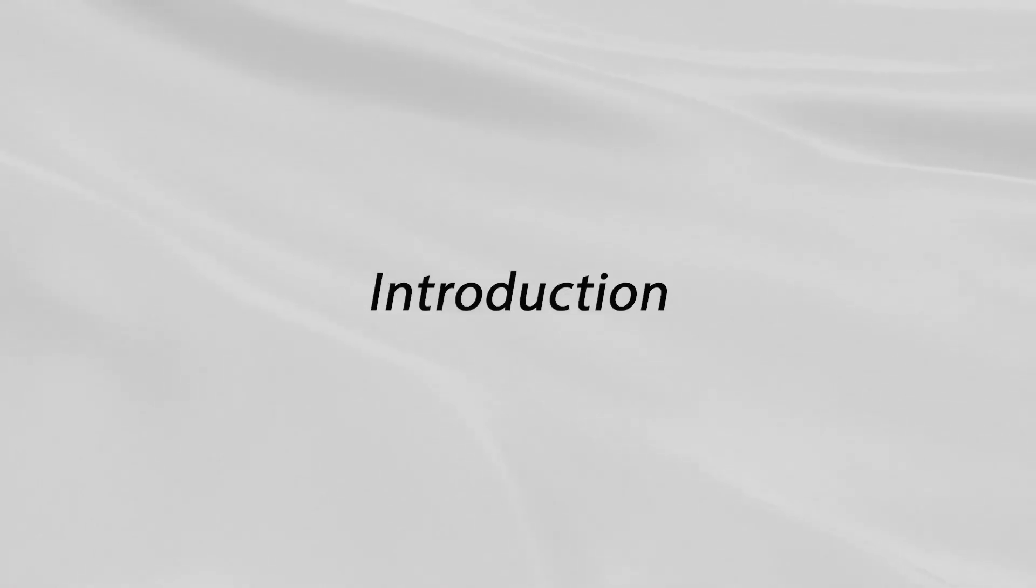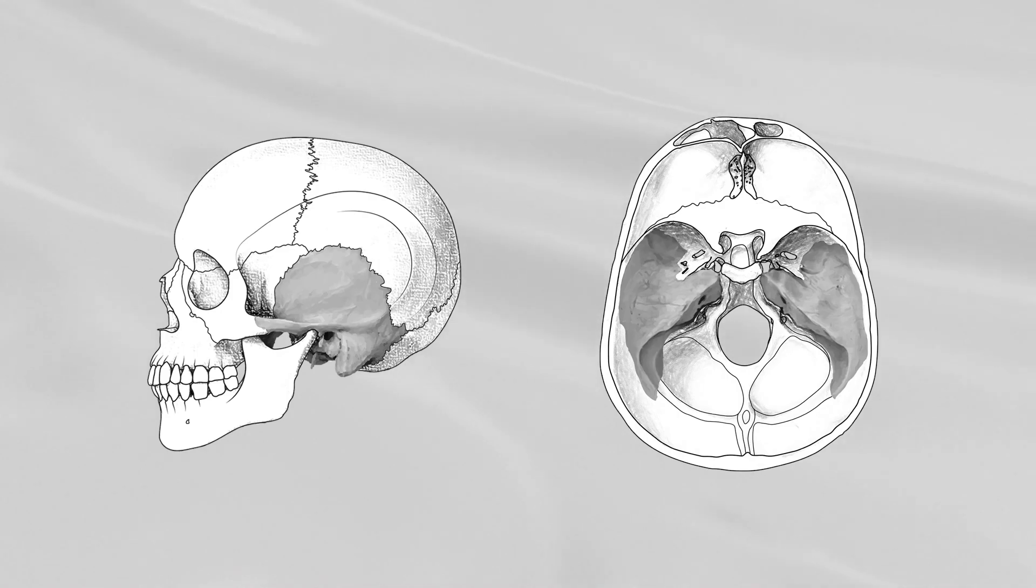Temporal Bone, Part 1. Introduction: The temporal bones are paired bones that are situated at the sides and base of the cranium. Each consists of five parts.